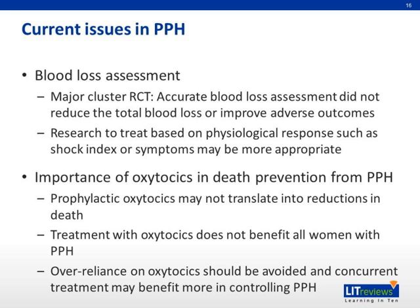Next, we talk about the importance of oxytocin in death prevention from PPH. Prophylactic oxytocin may not translate into reductions in death, though it is definitely important in the reduction of PPH itself. However, oxytocin treatment does not benefit all women with PPH, because the etiology of PPH does not only include uterine atony. Other causes such as uterine rupture, placenta praevia, lacerations, and hematomas may come into play, and oxytocin may not be helpful in such situations. Therefore, over-reliance on oxytocin should be avoided.